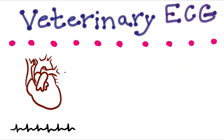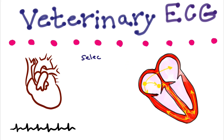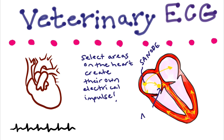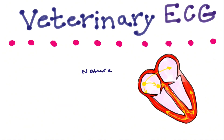An ECG is a moving graph of the electrical activity of the heart. The heart can beat spontaneously because select areas have the ability to create their own electrical impulse. These areas are the SA node in the right atrium, the AV node just above the ventricles, and the ventricles themselves.